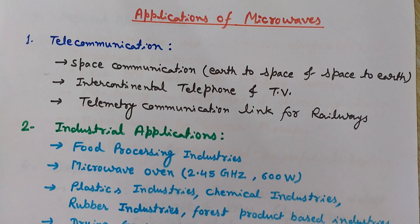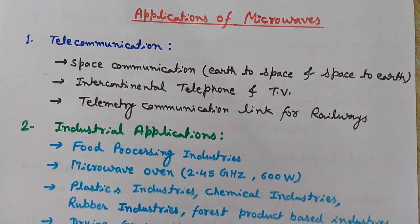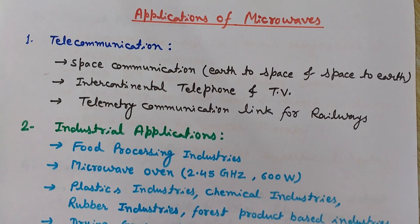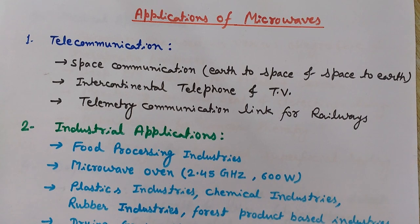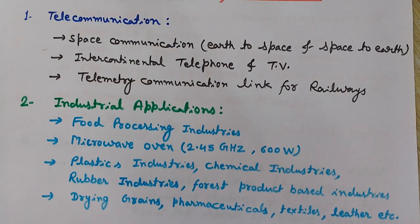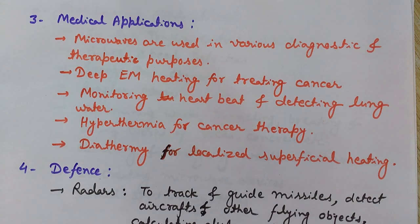Another field of application is industries. In industries, microwaves are used for their heating properties. They are used in food processing industries and microwave ovens, which work at 2.45 gigahertz and 600 watts. They are also used in rubber, plastic, chemical, and forest product industries, as well as in mining and public works such as breaking rocks, drying or breaking up concrete, and curing cement.